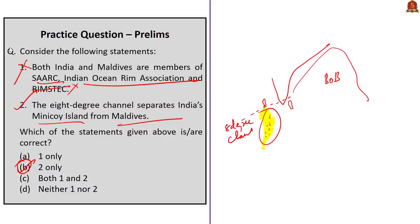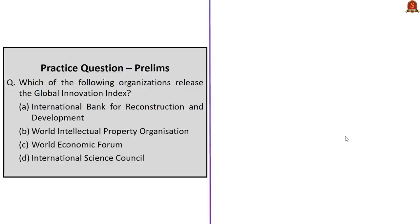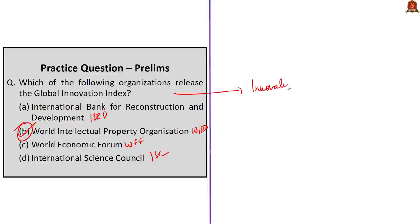Practice question: Which of the following organizations releases the Global Innovation Index? The options are: IBRD, World Intellectual Property Organization (WIPO), World Economic Forum, and International Science Council. The correct answer is option B — World Intellectual Property Organization. This index ranks the innovation performance of countries and economies across the world based on 80+ indicators. It is co-published by WIPO, Cornell University, and INSEAD.